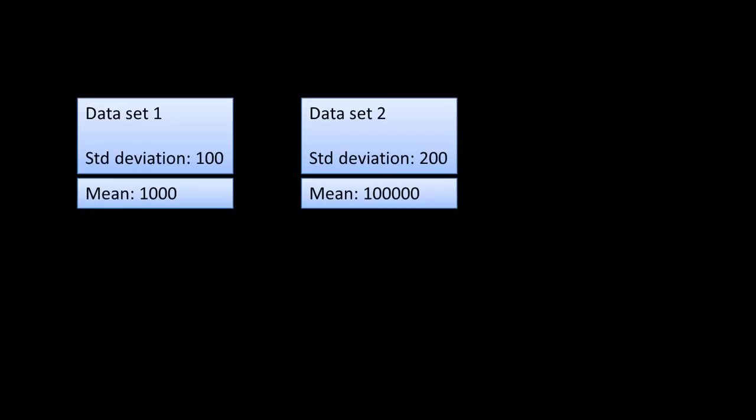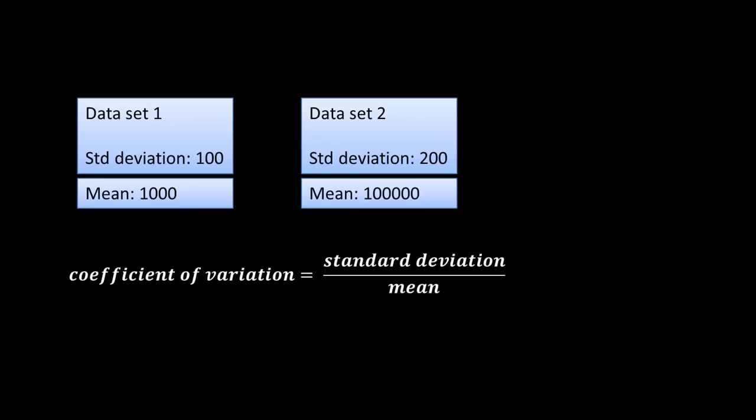What we are driving at is that standard deviation by itself can sometimes not give us the whole picture. We should try to see the standard deviation in the context of the mean of the population. Therefore, there is another figure called the coefficient of variation, which is standard deviation divided by the mean.